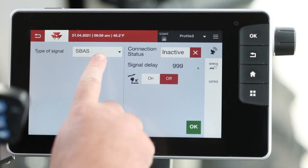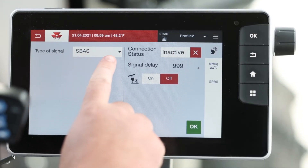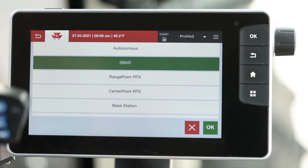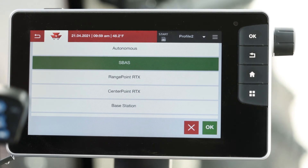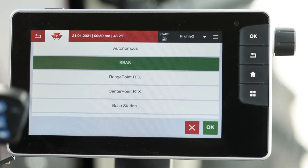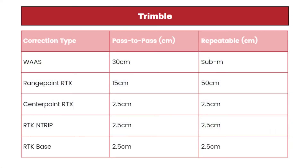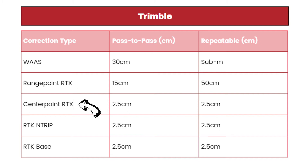Next to the type of signal drop down box, once selected, you'll see all of the available options for your current receiver. Today we have a Trimble receiver installed on our tractor so we can see the options available: SBAS or WAAS being a free service, followed by Trimble's Rangepoint RTX or Centerpoint RTX.